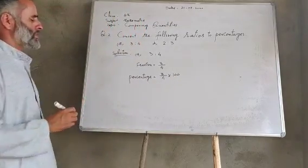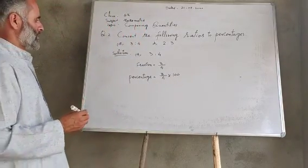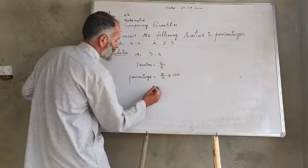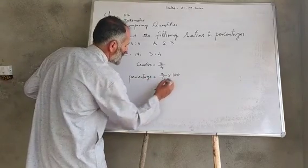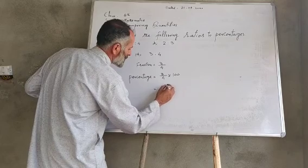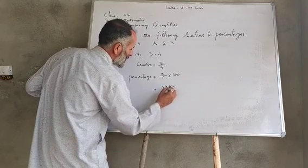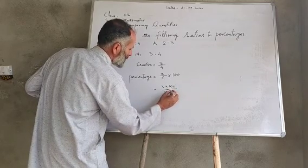This is the percentage formula. We multiply by 100. So we get 3 into 100 divided by 4.